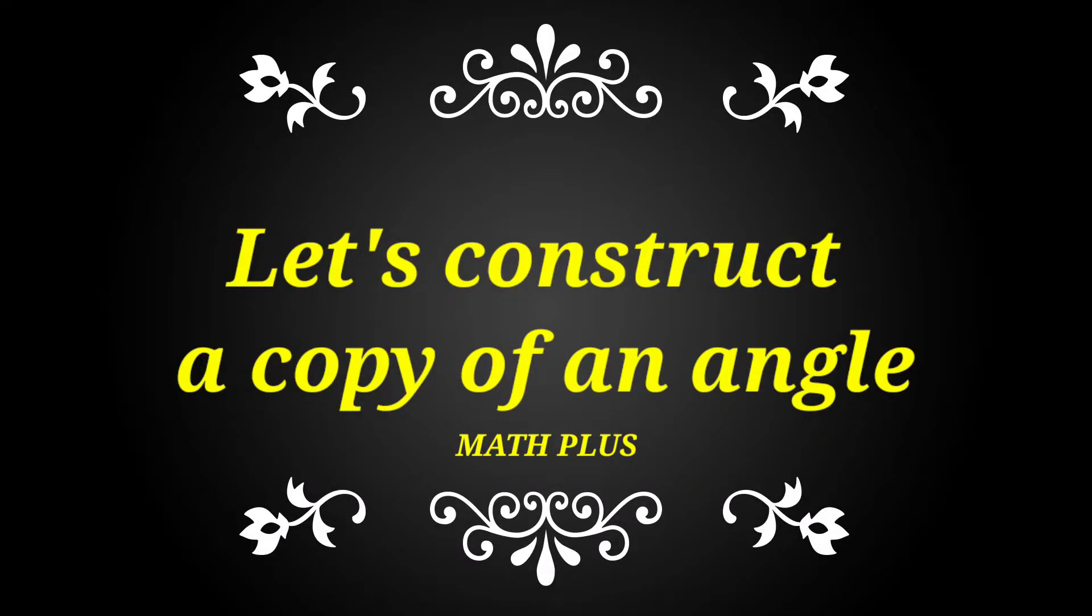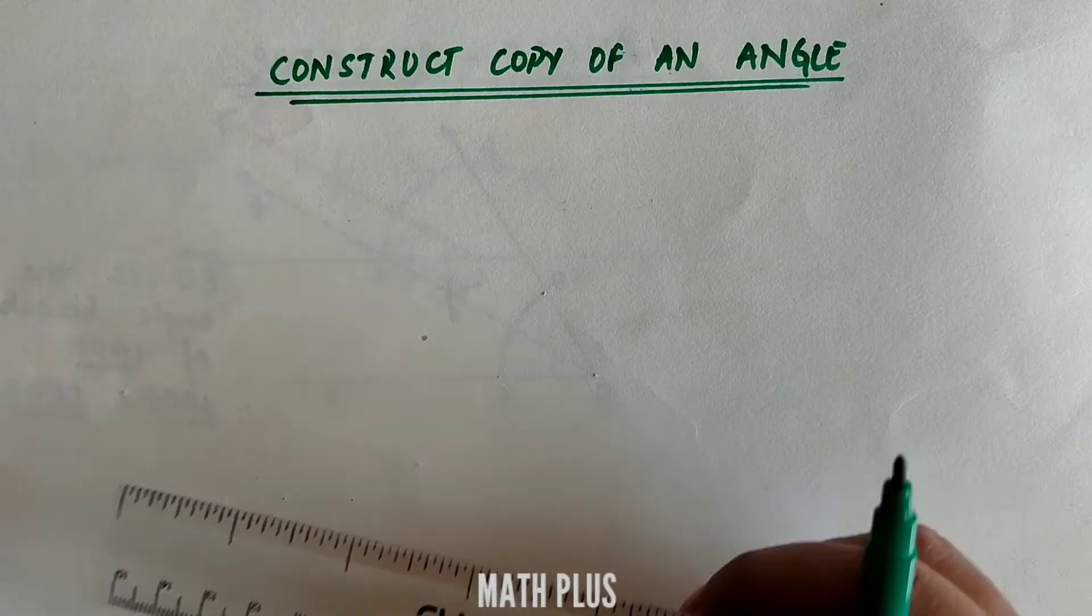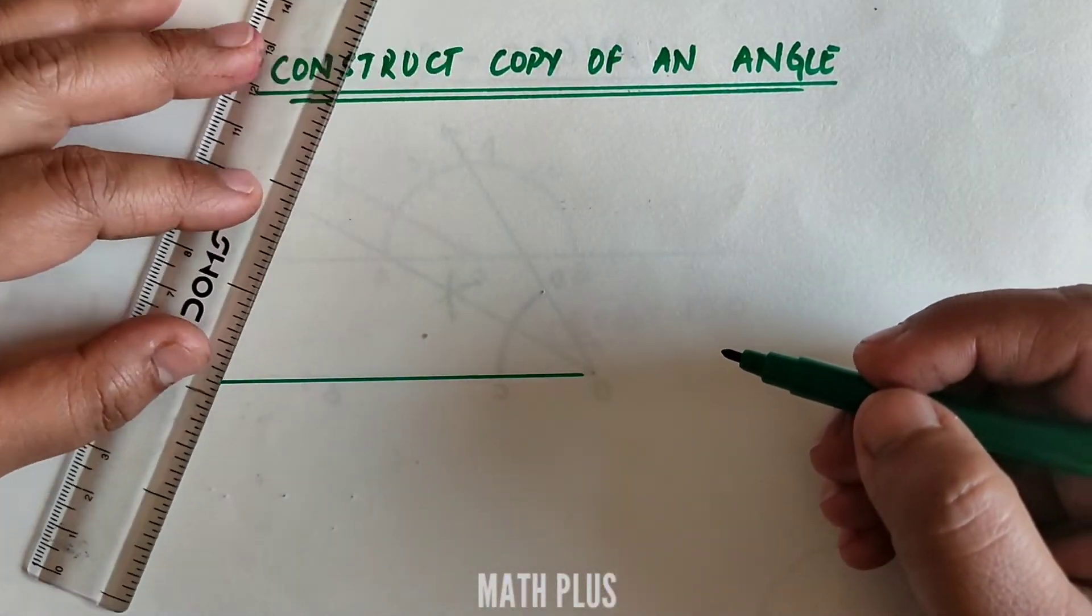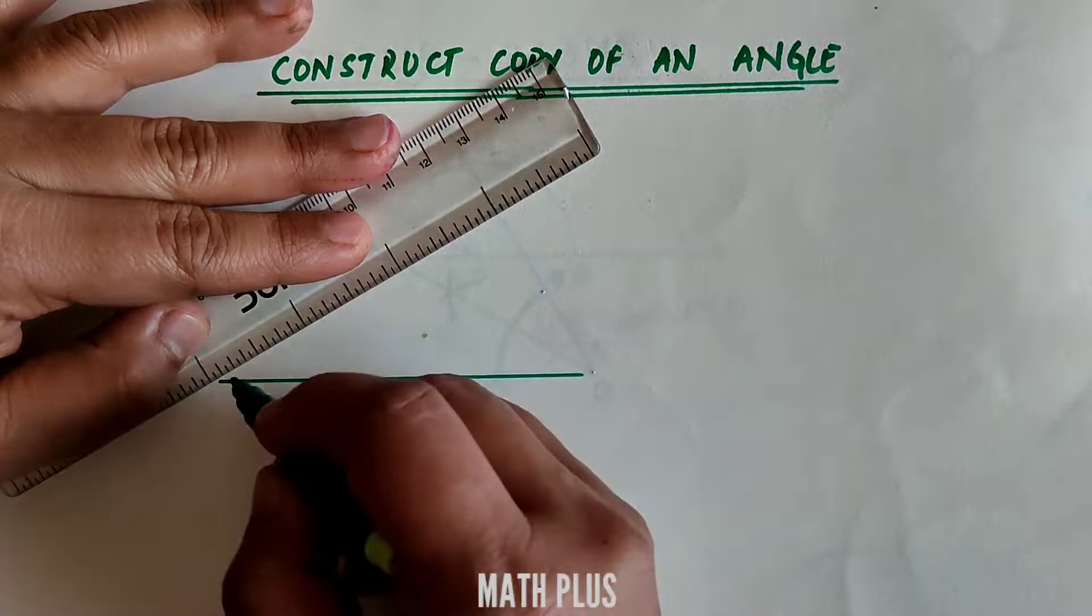Hello everyone, welcome to Math Plus. Today we are going to construct a copy of a given angle. So whenever an angle is given, how to construct a copy of the same without measuring it?